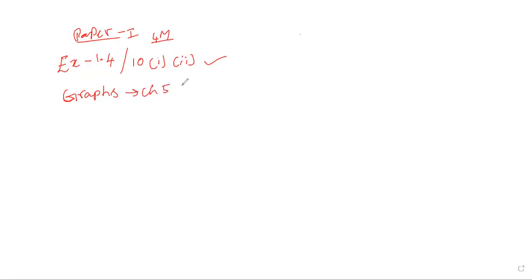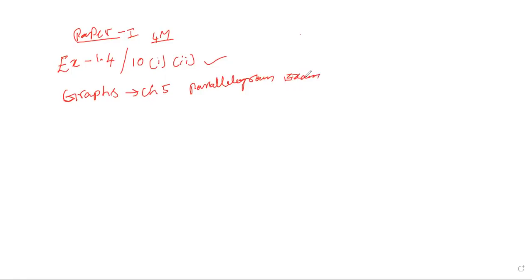That is a coordinate — very important. There are 4 graphs. The graph involves a parallelogram. The area of a parallelogram, and the rectangle. Parallelogram is example 9. That is something we have to check.